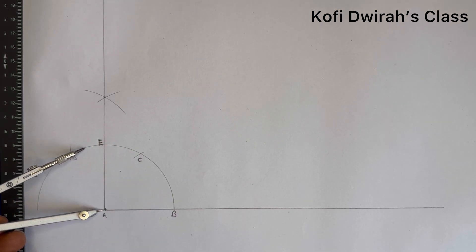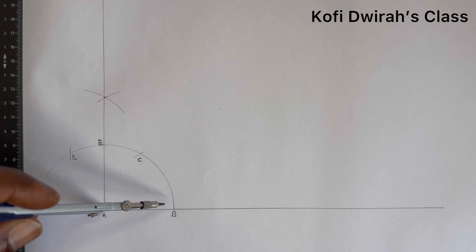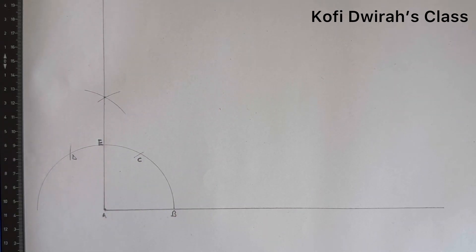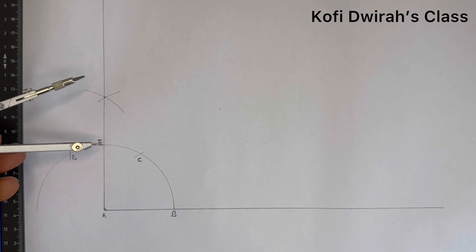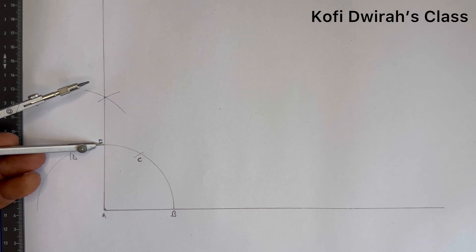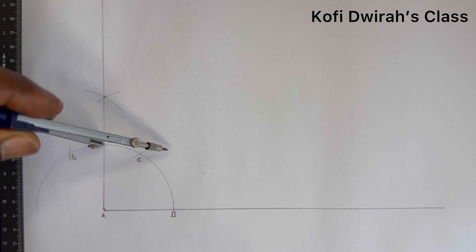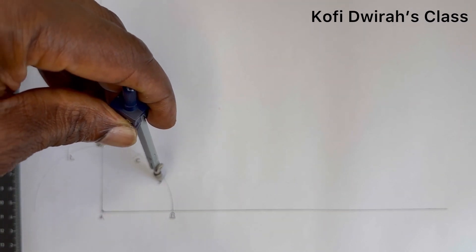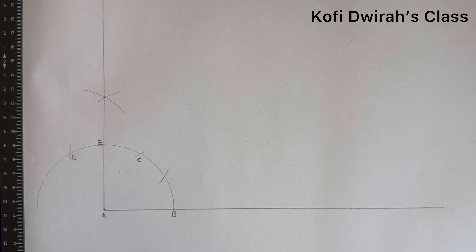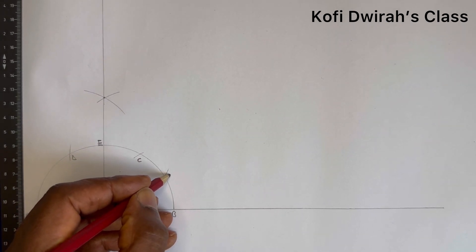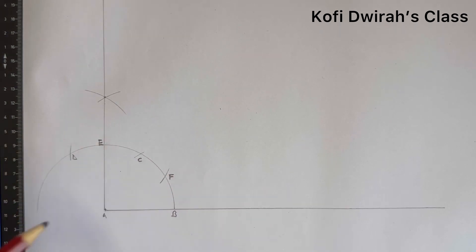With that same radius, measure the distance from A to B. At point E, use that same radius to draw an arc here to get point F. Now we have point F here.